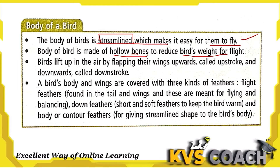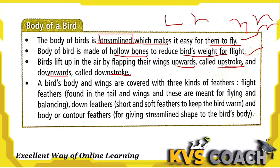Birds lift up in the air by flapping their wings upwards, called upstroke, and downwards, called downstroke. When birds want to fly in the sky, their wings go in the upper direction — this is called upstroke. When they come down to the earth or onto the branches of a tree, they bring their wings down — that is called downstroke.